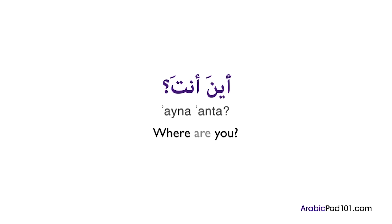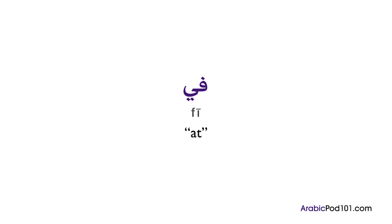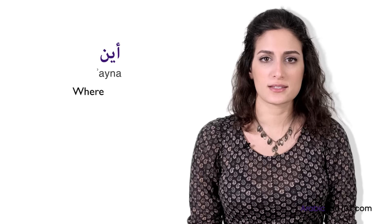In Arabic, there's no such thing as 'at,' 'in,' or 'into' — it is all translated into في. So أنا is 'I am,' في is 'at,' and المدرسة is 'the school.' In Arabic, 'where' is mainly translated as أين. For example, if you want to ask 'where do you live,' you will say: أين تسكن؟ As in English, the question word is placed first, then the verb — unlike English, the subject is included in the verb.